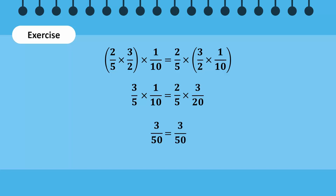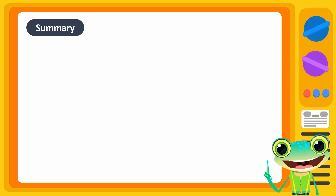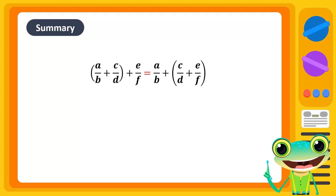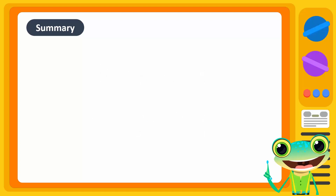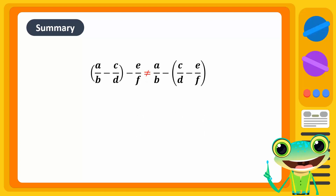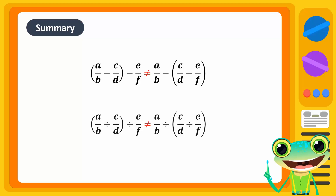The left-hand side of this equation is equal to the right-hand side, so the multiplication of these rational numbers is associative. To summarize, the addition and multiplication of rational numbers is associative, while subtraction and division of rational numbers is not associative.